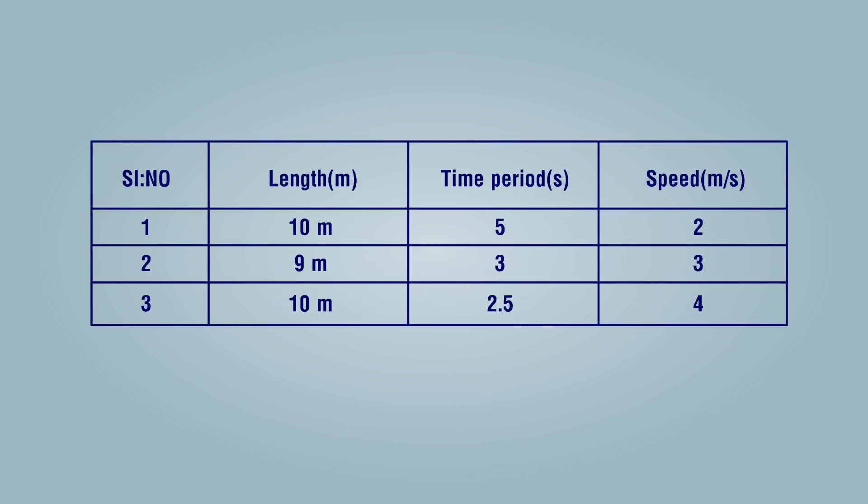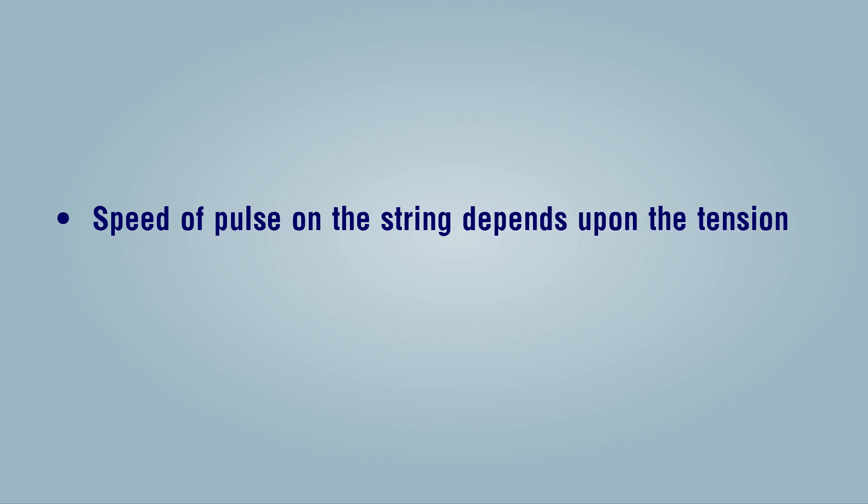Calculate the speed of pulse on the string by v = L/T, where L is length of the string and T is time period. Conclusion: speed of pulse on string depends upon the tension and linear density of string.